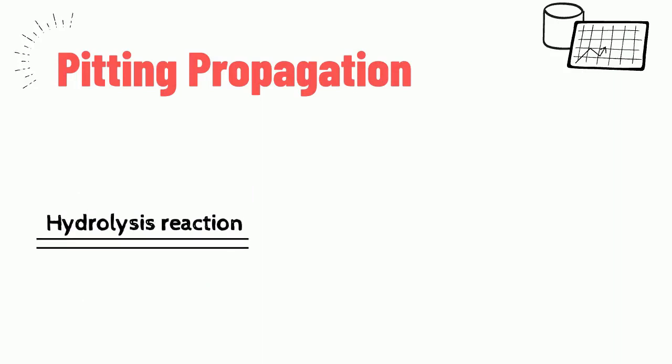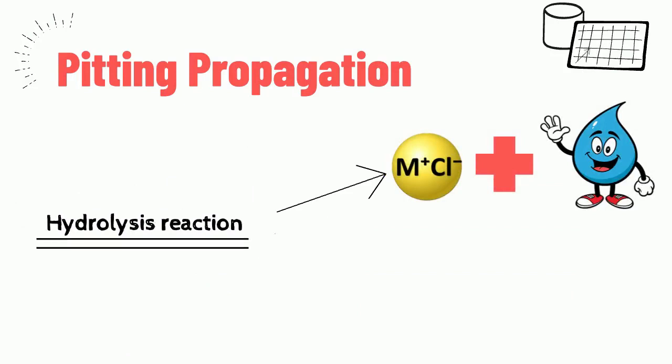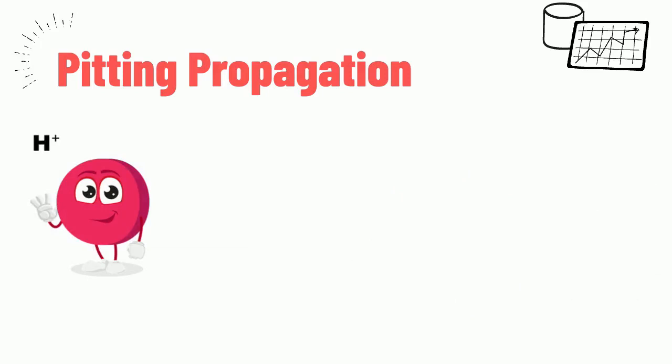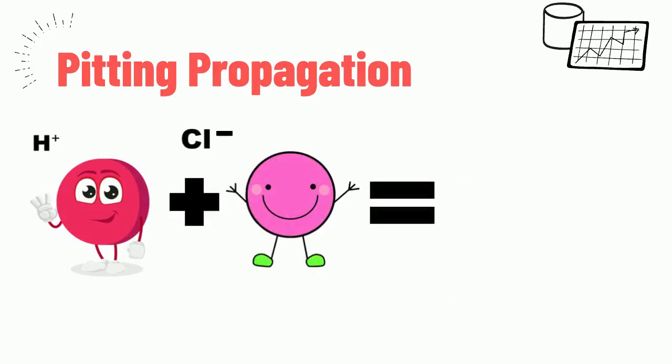Next, hydrolysis reaction will take place where the reaction of metal ion and chlorine with water results in the formation of metal hydroxide and hydrochloric acid. The presence of hydrogen ions and chloride content prevents repassivation.